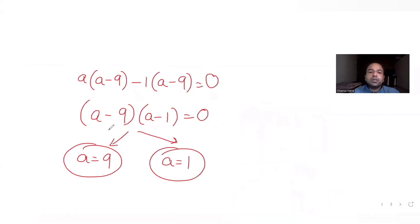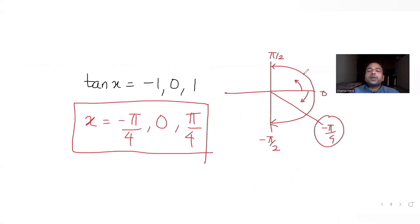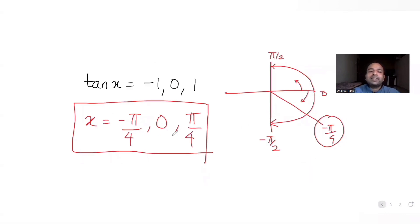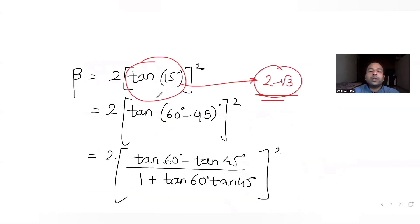From tan x = -1, 0, or 1 within [-π/2, π/2], we got x = -π/4, 0, π/4. We then computed β = Σ tan²(x/3): tan²(0) = 0, and tan(-15°) and tan(15°) square to the same value, giving β = 2·tan²(15°).